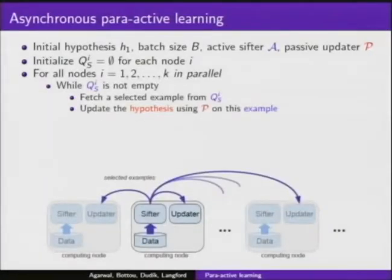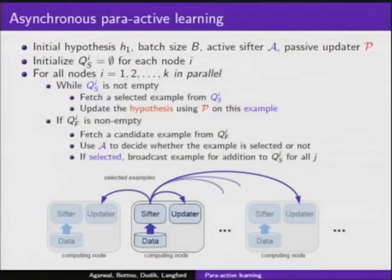You can make this asynchronous fairly easily. So the idea is almost the same. So now you do something very simple. You take each node and you basically attach two queues to each node. One queue is going to be a queue of selected examples that have been identified as informative by some node in the network. And another queue is going to be examples that are waiting to be processed by the active sifter. So while you have selected examples available to you, you keep on updating your hypothesis by using these examples. At some point, maybe you run out of them. At that point, you turn to your local data and start sifting through your local data until you find some informative examples again. And whenever you find one, you broadcast, you add it to the queue of every node in the network. You just do a broadcast. So fairly simple again.